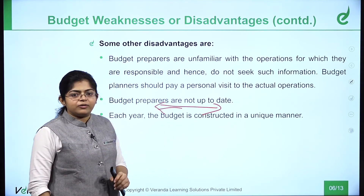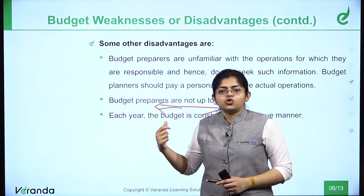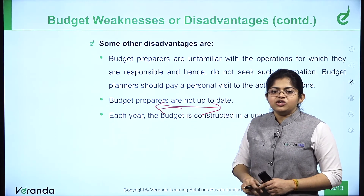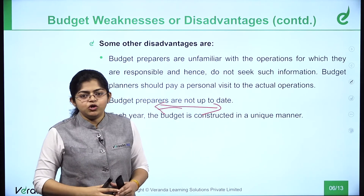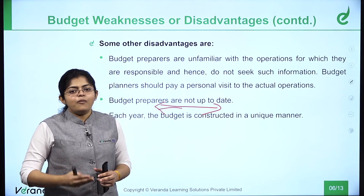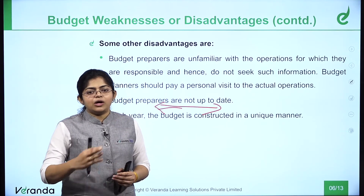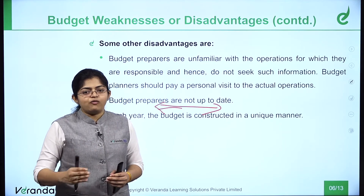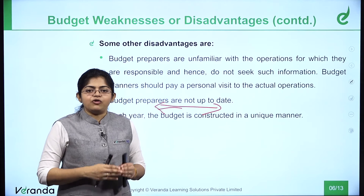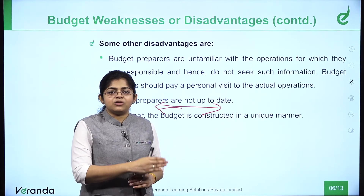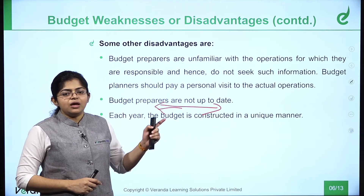Each year, the budget is considered in a unique manner. When the preparation process is not consistent, it leads to inefficiency and budget preparers become unfamiliar with operations. For example, the introduction of GST meant budget preparers had no clear idea how much revenue GST would contribute. Similarly, demonetization created uncertainty about the economy's performance. When formulating the upcoming year's budget based on income and expenditure, if income is uncertain — whether from tax or due to demonetization's impact — it becomes impossible to calculate income and expenditure accurately, creating chaos in budget formulation.